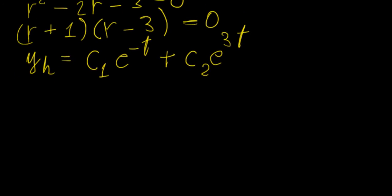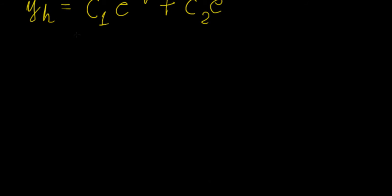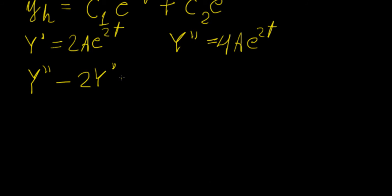So let's do that now. We're going to have Y prime equals to 2A e to 2t, and Y double prime equals to 4A e to 2t. Now the original differential equation has the form y double prime minus 2y prime minus 3y equals e to 2t.